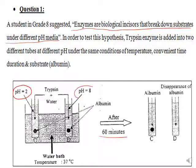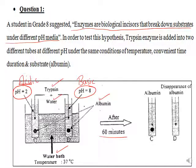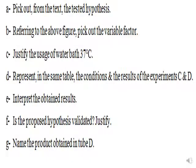The variable factor here is the pH. In the first tube pH equals 2, while in the second tube pH equals 8. This figure shows the conditions of the experiments and the results after 60 minutes. In tubes C and D, both contain albumin, both are placed in a water bath at 37 degrees Celsius, both contain trypsin and water. The variable factor between tubes C and D is the pH: tube C has pH 2 (acidic medium) while tube D has pH 8 (basic medium). Trypsin works in a basic medium, so after 60 minutes the albumin remains in tube C while in tube D the albumin is digested.